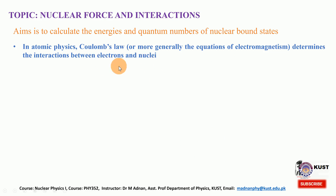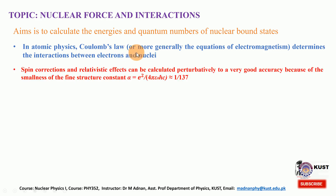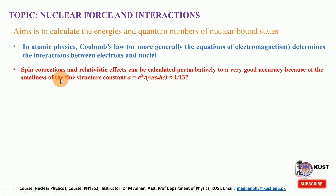In atomic physics we have electrons and nuclei, and those interactions are governed by Coulomb's law, or generally the equations of electromagnetism. So in atomic physics, electromagnetism determines the interactions between the electrons and the nucleus. That is the fundamental principle — starting from first principles — and then that interaction between the electrons and the nuclei can have quantum corrections, such as spin corrections and relativistic effects, incorporated through perturbative analysis. This is accurate since the fine structure constant alpha equals 1/137.